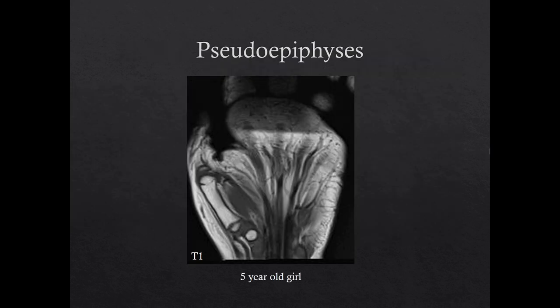Finally, a normal variant which may be seen in the hands and feet is the pseudoepiphysis, which is an accessory epiphysis. The metacarpals and metatarsals typically grow from only one end. In the case of the first metacarpal, the epiphysis is seen at the proximal end. A pseudoepiphysis may be seen at the non-growing end and often fuses earlier, where a notch or cleft may be seen.